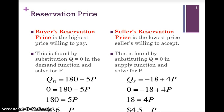The seller's reservation price is the lowest price the seller is willing to accept for the good or service. Given a supply function, we find it by substituting Q equals 0 and solving for price. Given QS equals minus 18 plus 4P, substituting Q equals 0 and solving gives a price of $4.50 — the seller's reservation price. Using the buyer's and seller's reservation prices, we can calculate consumer surplus and producer surplus.